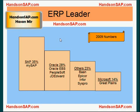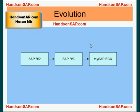Tier two ERP applications take third position with 23% market share. This category includes ERP software like BAN, Epicor, Infor, and SysPro. Microsoft has 14% market share with its product called Great Plains. These are 2009 numbers.